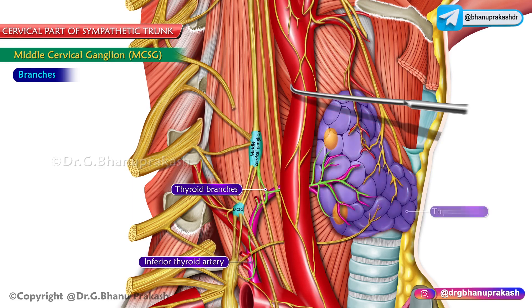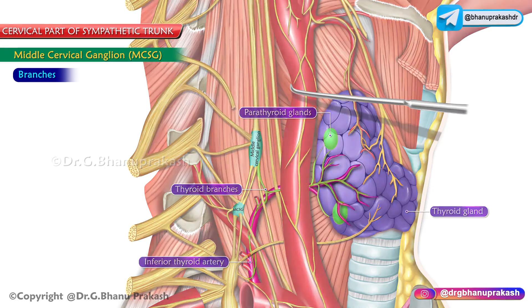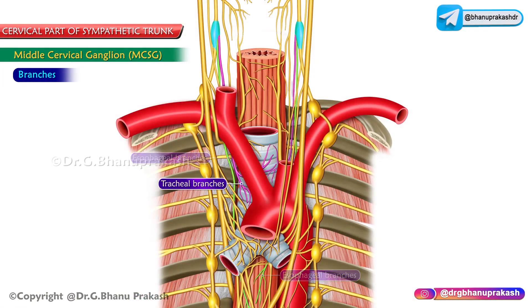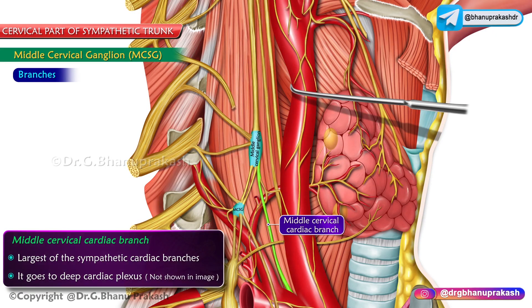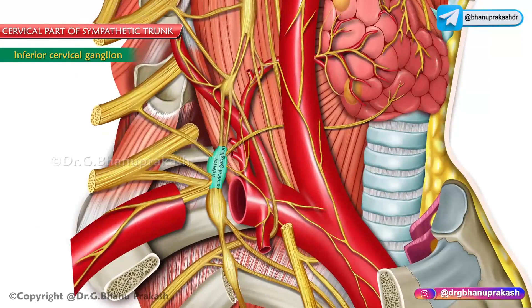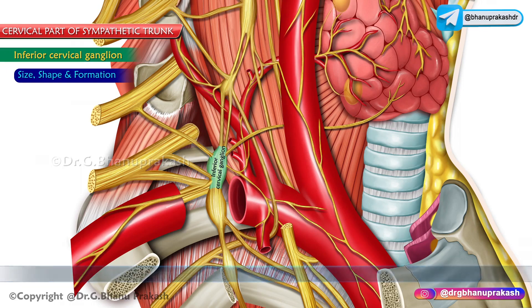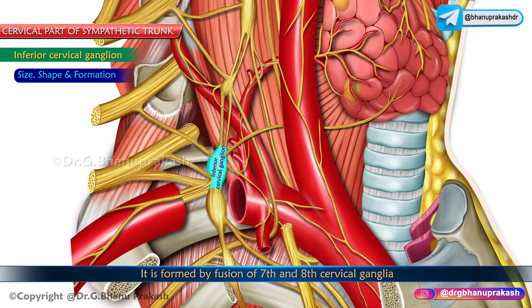The thyroid branches from the middle cervical ganglion supply the parathyroid glands. There are also tracheal and esophageal branches. The middle cervical cardiac branch is the largest of the sympathetic cardiac branches and goes to the deep cardiac plexus.